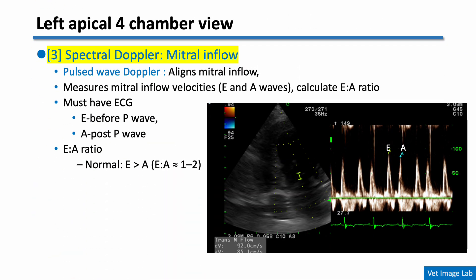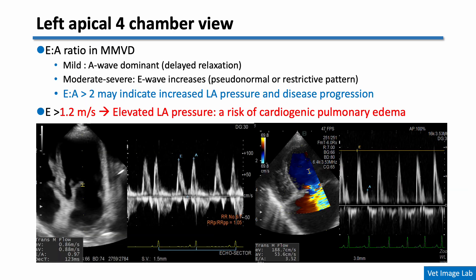Now let's check the mitral inflow using spectral Doppler. We use pulsed wave Doppler aligned with the mitral inflow to measure E and A wave velocities and calculate the E to A ratio — the ratio between early and late diastolic filling. In healthy adult dogs, the E wave is typically higher than the A wave, so the E-A ratio is approximately between 1 and 2. This pattern may change depending on diastolic function and the stage of MMVD. An E to A ratio over 2 may suggest elevated left atrial pressure and advanced disease. E velocity above 1.5 m/s is another indicator of increased left atrial pressure. These parameters should be interpreted alongside other clinical and imaging findings.